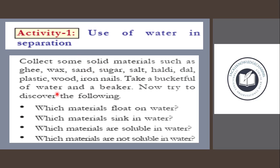Take a bucket full of water and a beaker. Now try to discover the following: which materials float on water? The materials tested are ghee, wax, sand, sugar, salt, haldi, dal, plastic, wood, and iron nails.